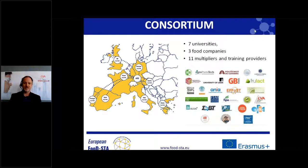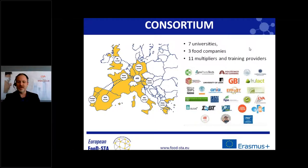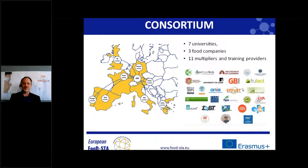The consortium comprises seven universities, three food companies, eleven multipliers and training providers — including Boko, AgroBaritTech, Polytechno Coimbra, GB Foods, Fausania, and many more. You can see the huge geographical distribution of this European FoodStar network and its European-wide access.